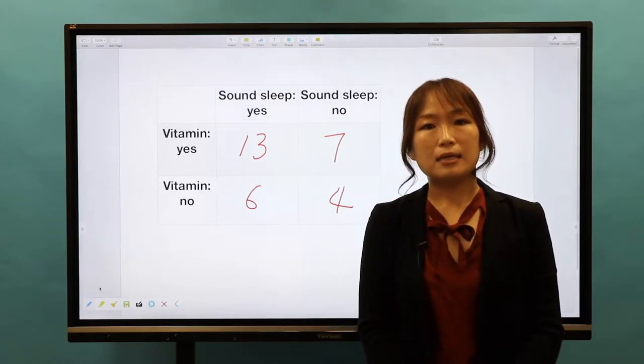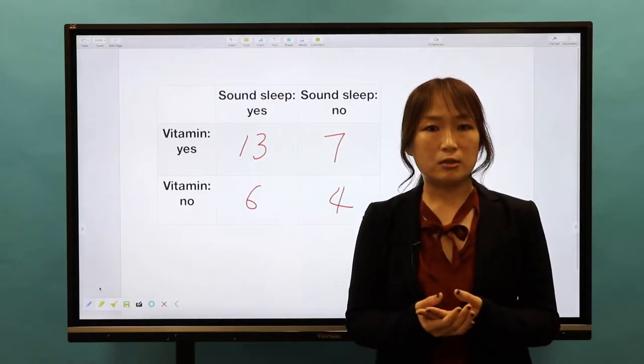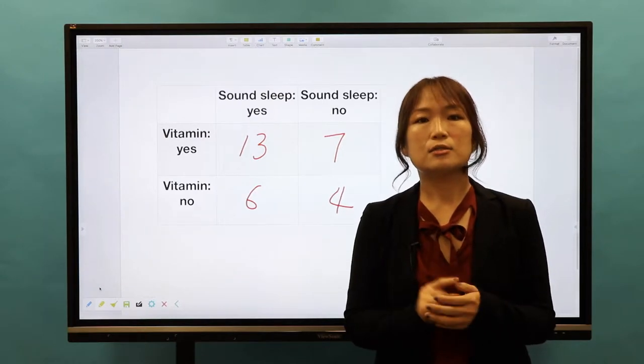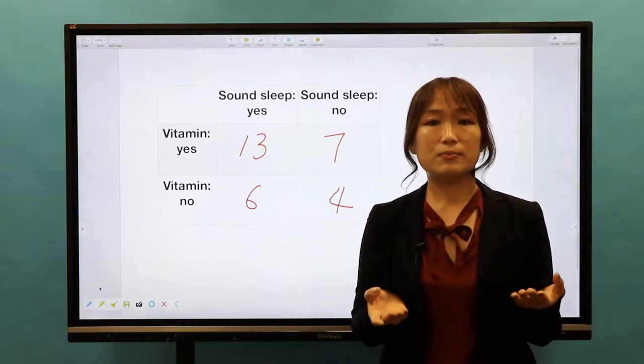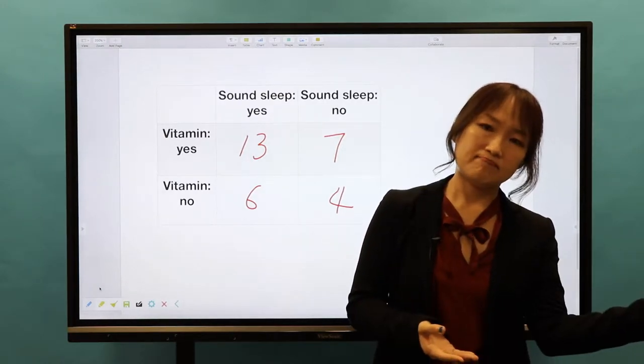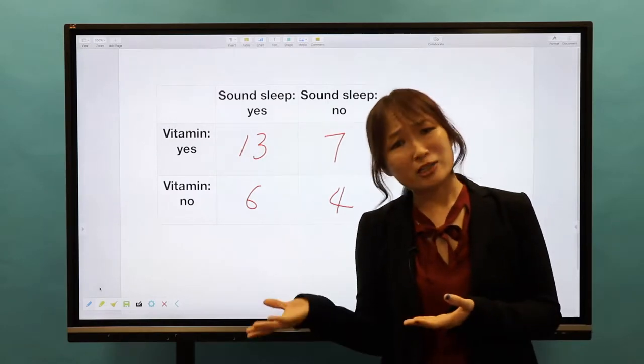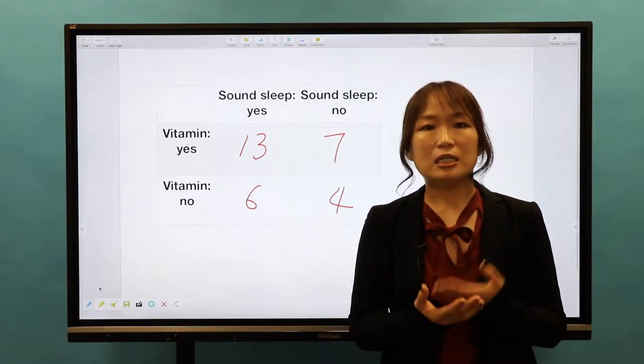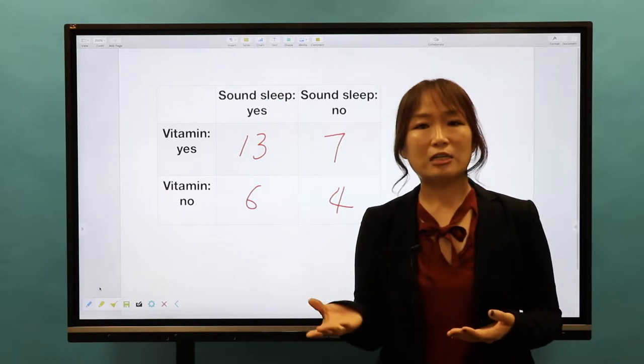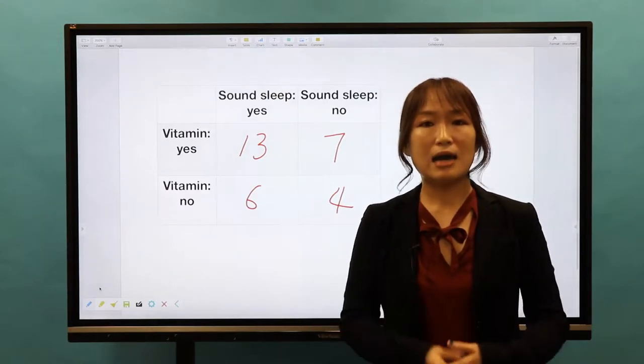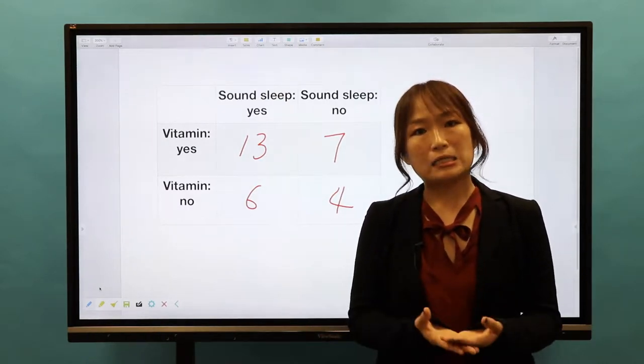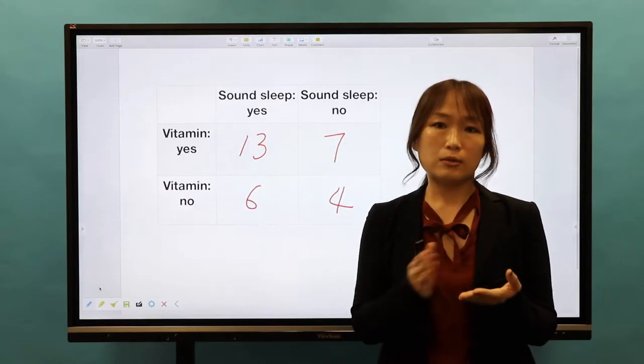Another example can be college admission results. In this case, the two categorical variables would be accepted or rejected. An applicant is either accepted or rejected, not both at the same time. So applicants belong to one of the two categories.